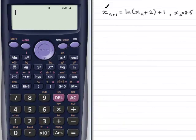Now, in this part of the question, we're given the iterative formula here, x_{n+1} equals the natural log of x_n plus 2 and plus 1. And the first term in the sequence, x_0, is equal to 2.5, and we've got to find the next three terms, x_1, x_2, and x_3.